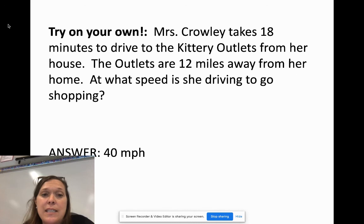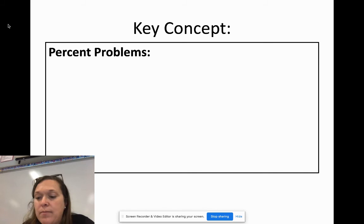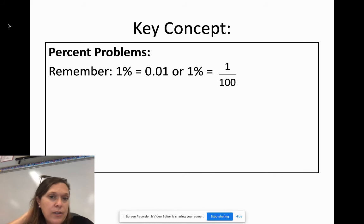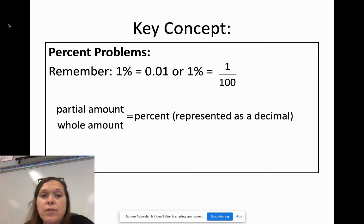So now we got to talk about percent problems. It's the last section that we have of our last topic that we have in this section. So if you guys remember when we're talking about percents, 1% is equivalent to 0.01. Or sometimes we can think about it as 1 out of 100, right? So 1 over 100. If you guys remember way back when we had this equation that your partial amount over your whole amount is equal to your percent, and that should be represented as a decimal. So part over whole, right, or is over of, you might remember those words, is how you get to your percents.